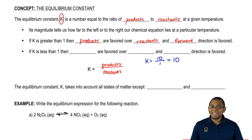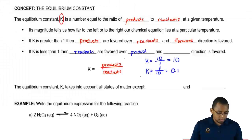In the opposite way, if K is less than 1, let's say we have products are 1, but our reactants are 10. We'd have a K less than 1. If K is less than 1, then reactants are favored over products, which means our reaction is heading in the reverse direction. So the reverse direction would be favored.